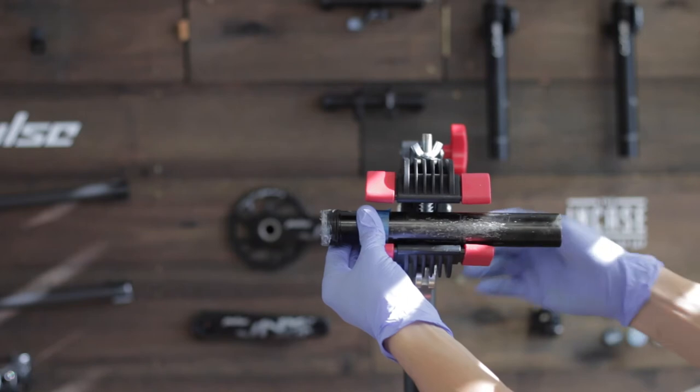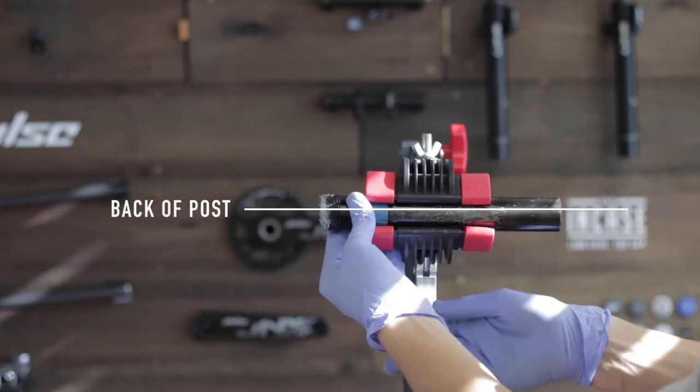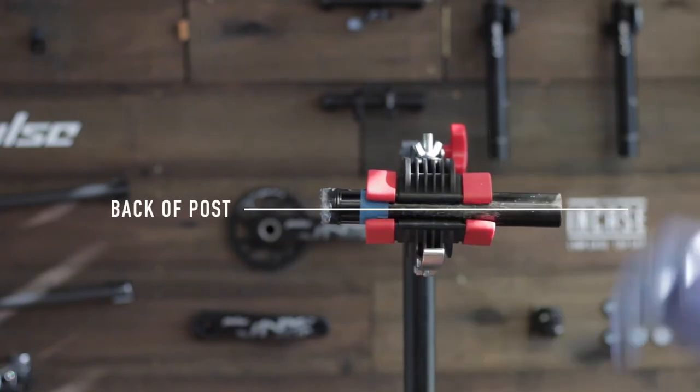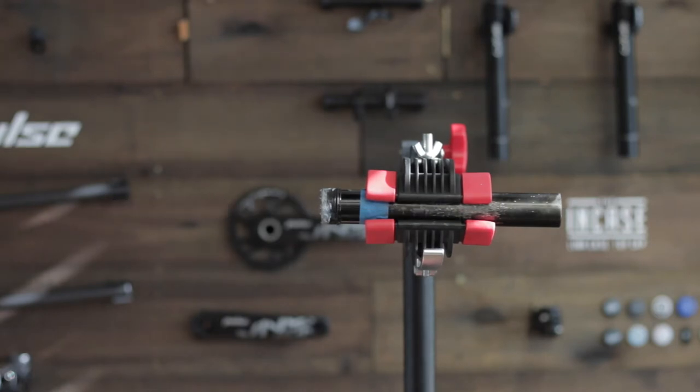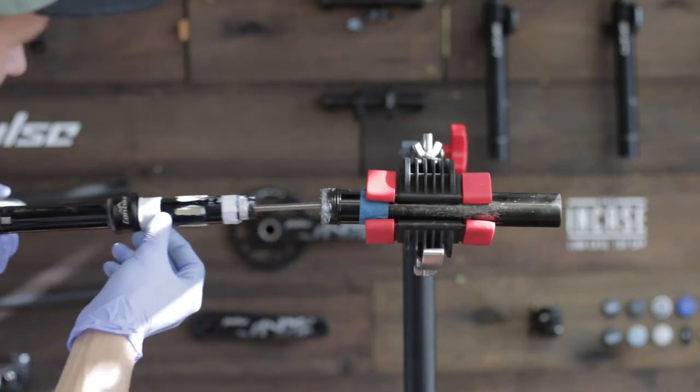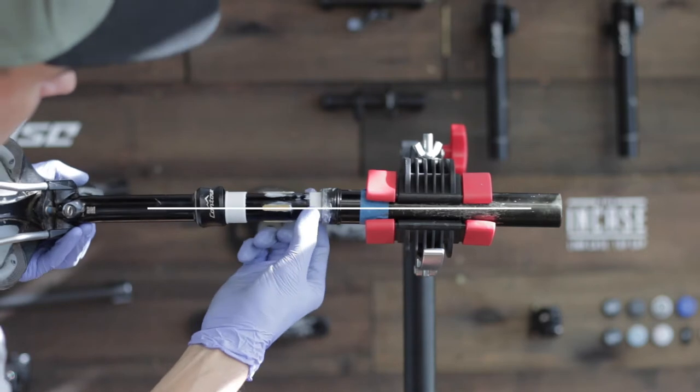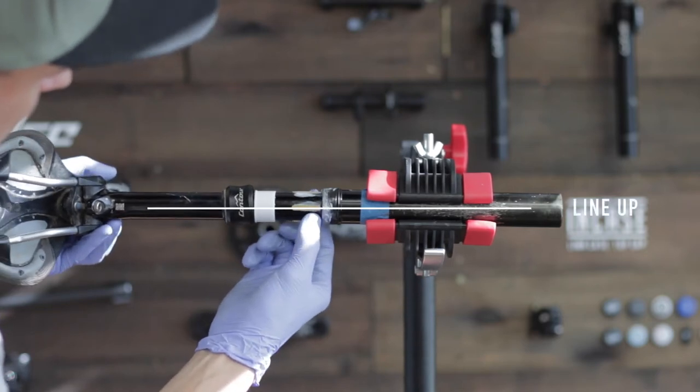Rotate the lower tube so that the back markings are facing outwards. Insert the stanchion into the lower tube. Line up the middle brass key with the back of the dropper post.